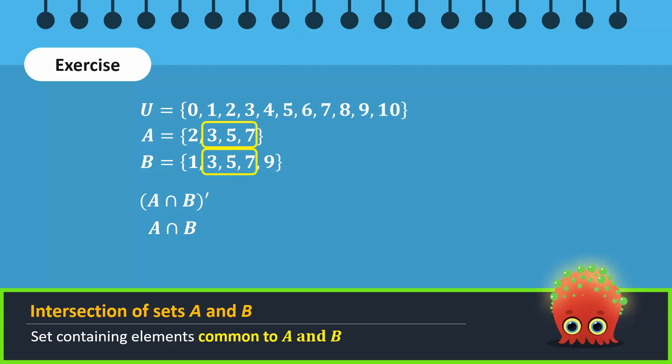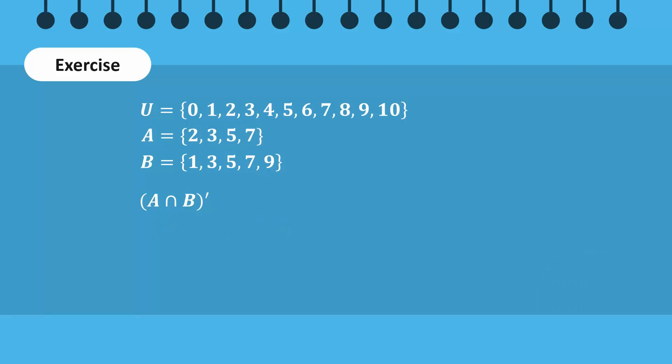So, A intersection B will contain these three numbers. The set A intersection B complement will contain all the elements in U except 3, 5, and 7.